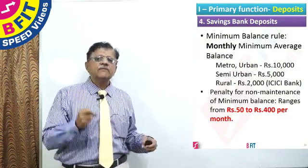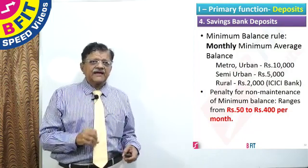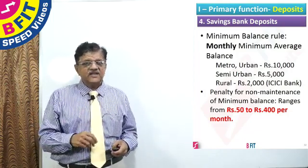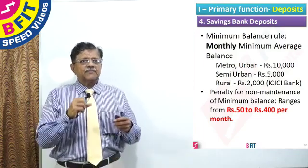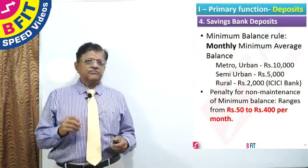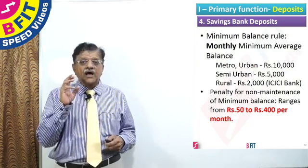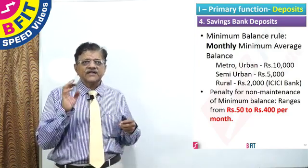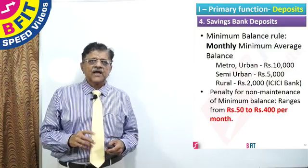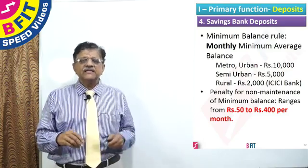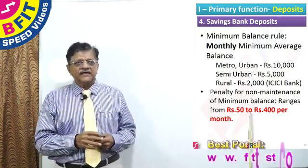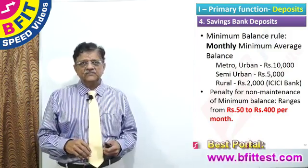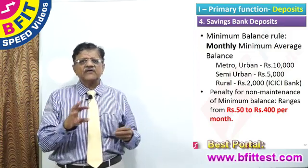What is this minimum balance stipulation? Every bank, especially private sector banks, has a very rigorous stipulation. For example, ICICI Bank has stipulated that for every metro or urban branch, you should keep a minimum deposit of 10,000 rupees. In semi-urban areas, the minimum deposit is 5,000 rupees. In rural areas, it is 2,000 rupees. This is more or less the same for many private sector banks.